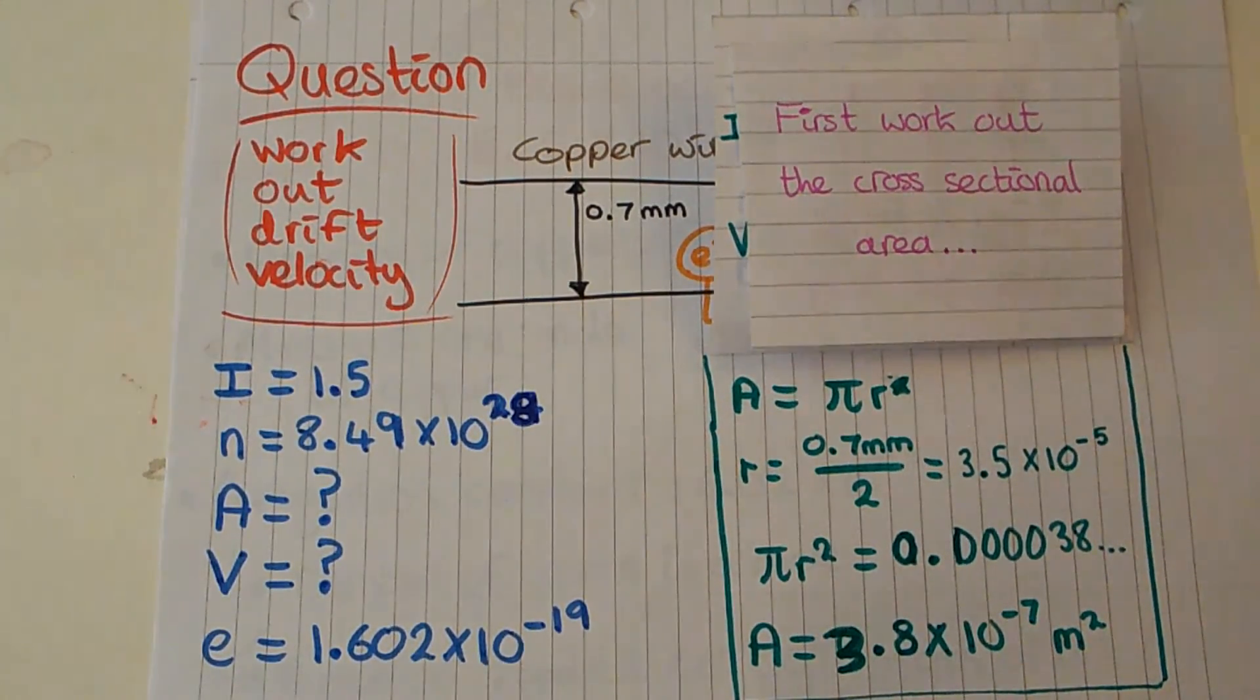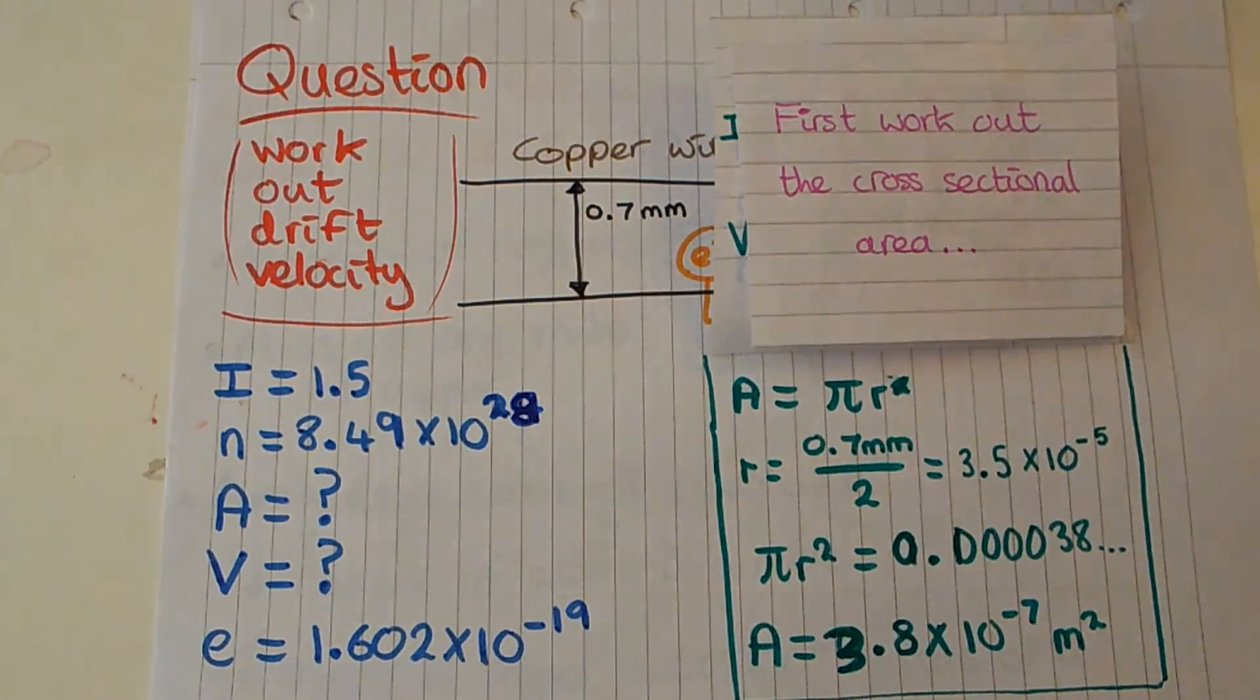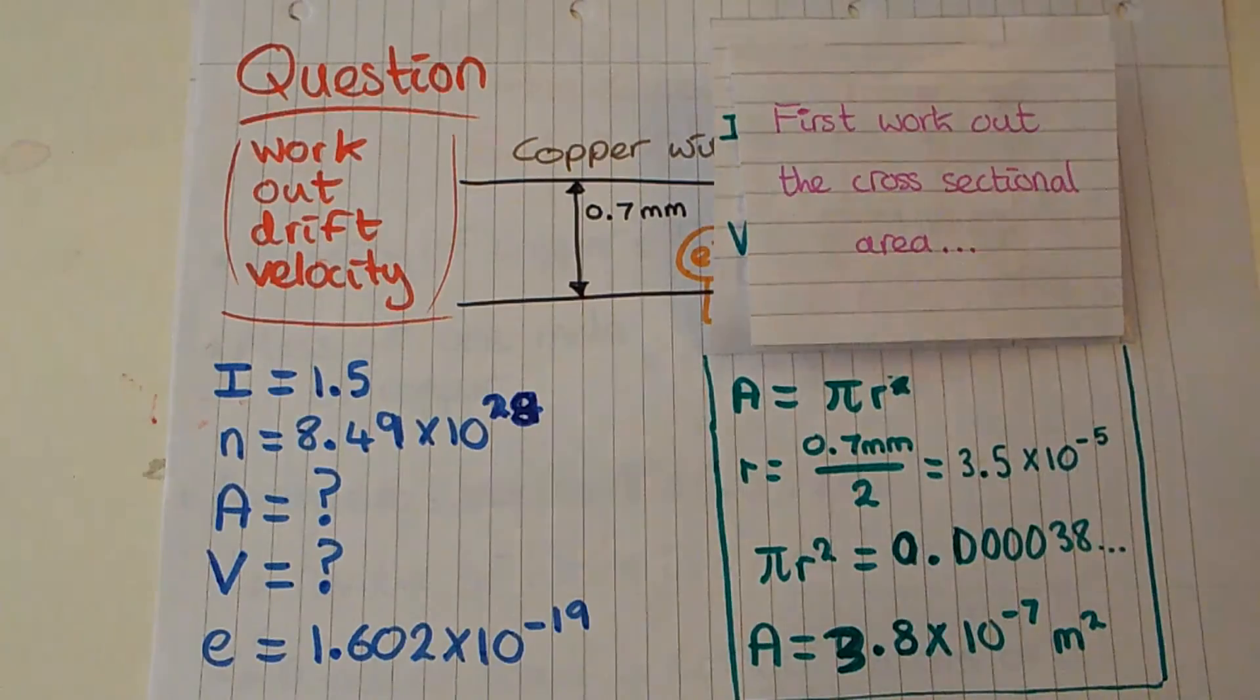So our radius is 3.5 times 10 to the minus 5 meters and that means pi r squared is 0.000038 or we can just call this 3.8 times 10 to the minus 7 meters squared. That's our cross sectional area.